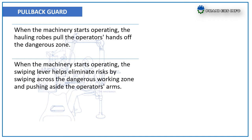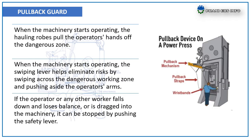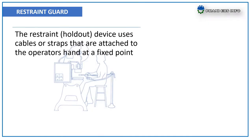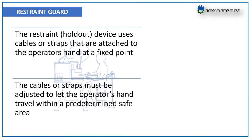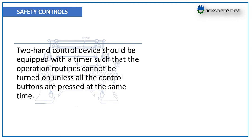The swiping lever helps eliminate risks by swiping across the dangerous working zone and pushing aside the operator's arm. If the operator falls down, loses balance, or is dragged into machinery, it can be stopped by pushing the safety lever. Example: pullback device on a power press. Restraint guard — the restraint, or hold-out device, uses cables or straps attached to the operator's hands at a fixed point. The cables or straps are adjusted to let the operator's hands travel within a predetermined safe area.